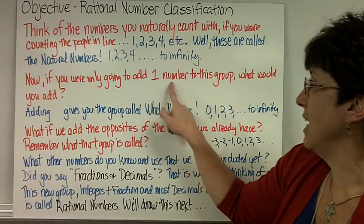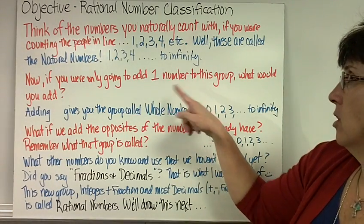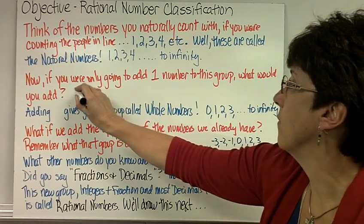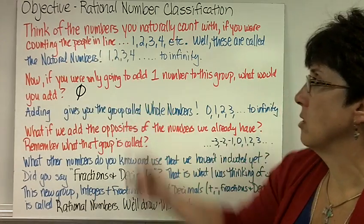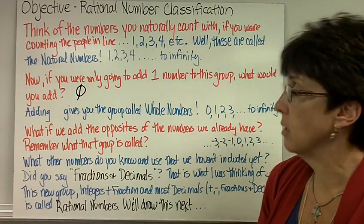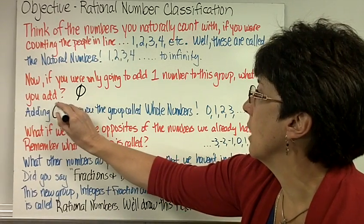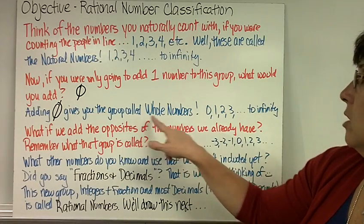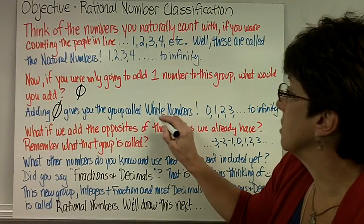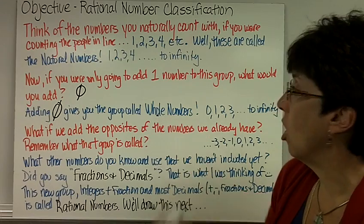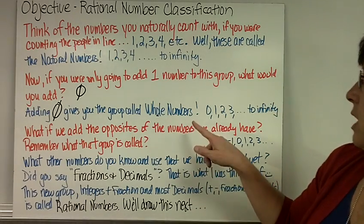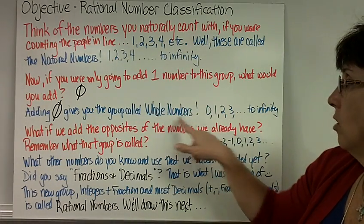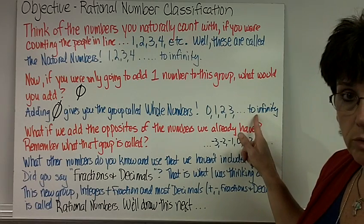Now, if you were only going to add one number to this group, what would you add? How about zero? Because zero means nobody's in line — how many people are in line? There's nobody in line. So adding zero — and I always put a line through it so you know it's not the letter O — gives you the group called whole numbers. I remember that because the word 'whole' has an O in the middle, which is kind of like a zero. Natural numbers are 1, 2, 3, 4 to infinity. Whole numbers are 0, 1, 2, 3, 4 to infinity.